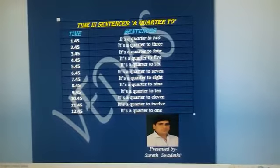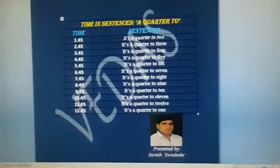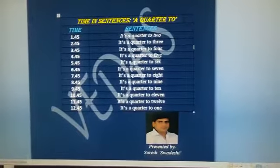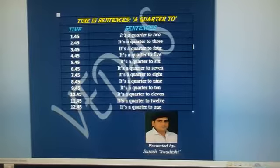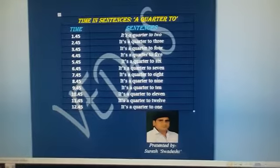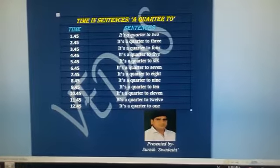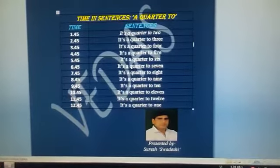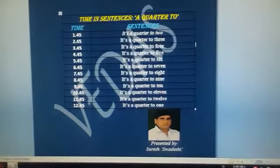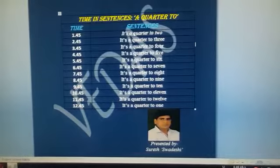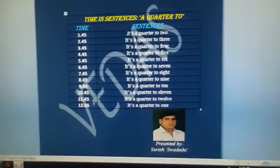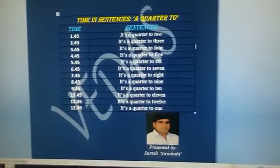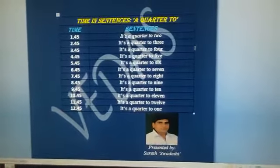When the time is 1:45, we say it's a quarter to two. When it is 2:45, we say it's a quarter to three. When the time is 3:45, we say it's a quarter to four.